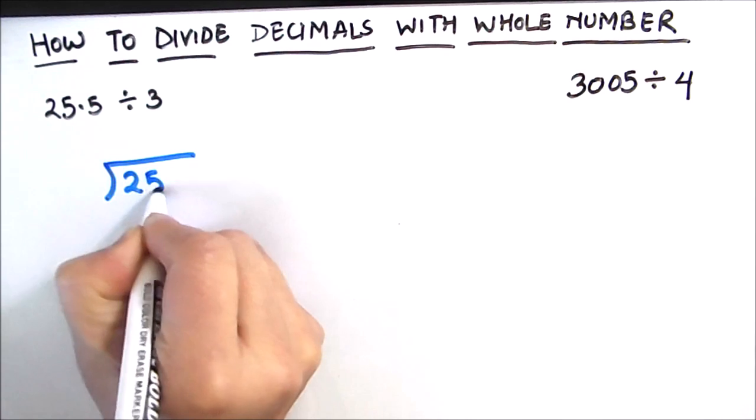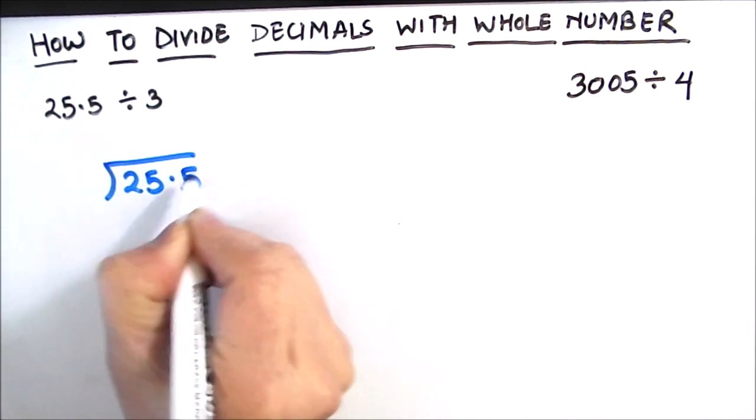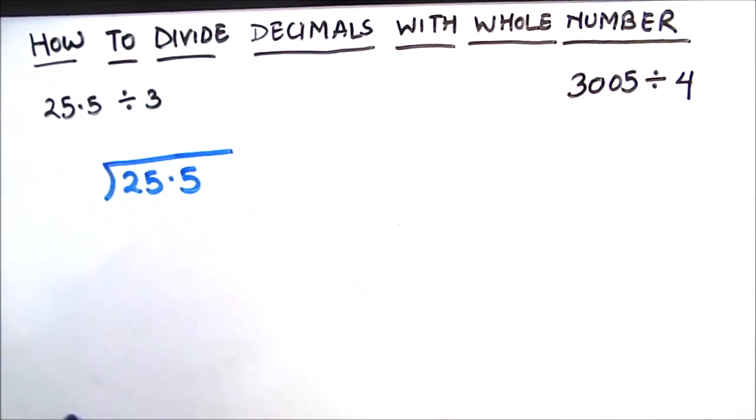So our dividend is 25.5, we will write it like this, and our divisor is number 3. In division we always start from the highest place value rather than the lowest place value as we do in other operations. In division we always start with the highest decimal place. So the highest decimal place number is 2 here.